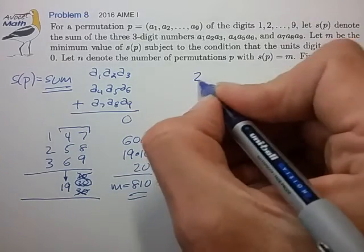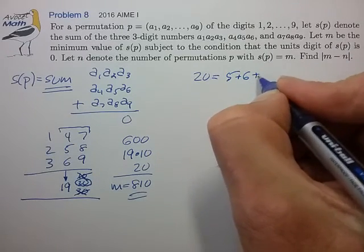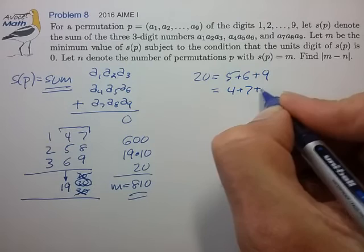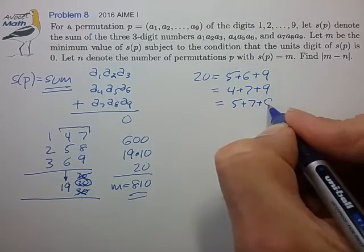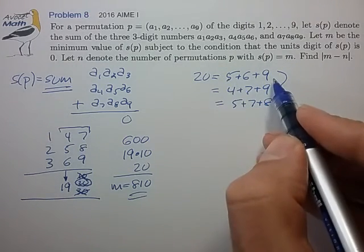So first, let's find out what sets of three digits can add up to 20. So the numbers that I find is that 20 you can write out as 5 + 6 + 9, or 4 + 7 + 9, or 5 + 7 + 8. And those are the only three that I can come up with.